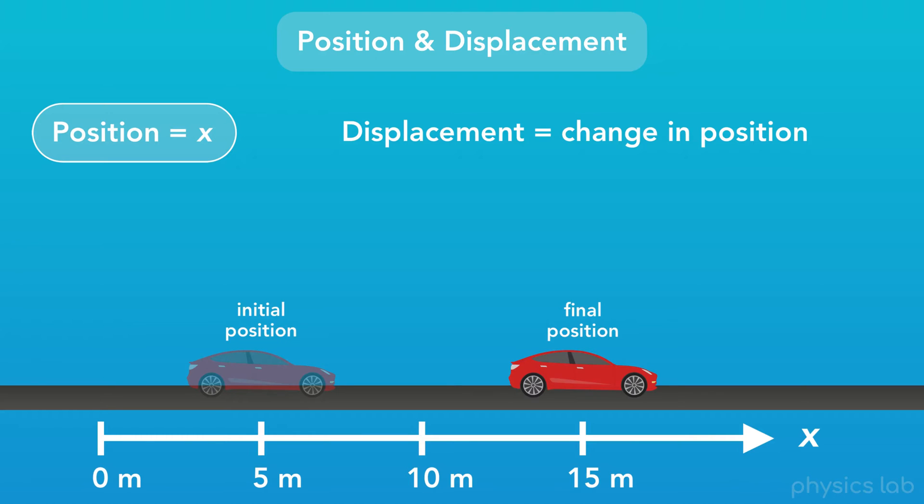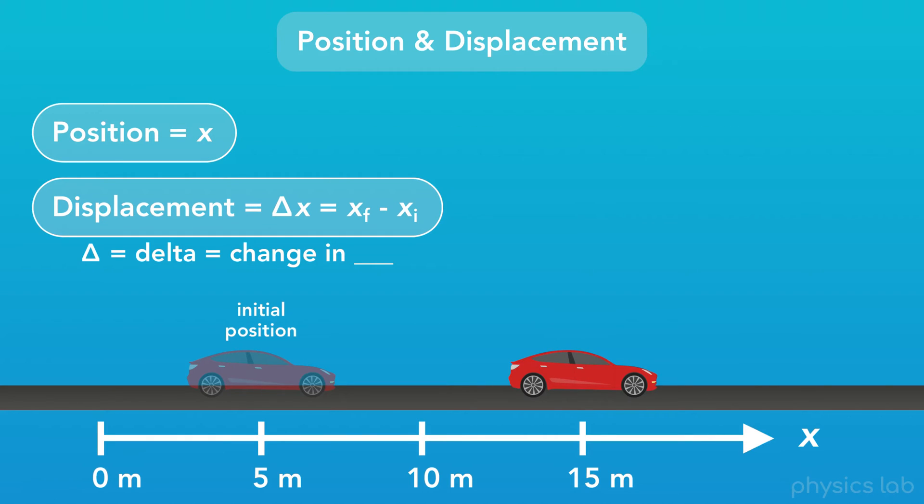Displacement is the change in position of an object. Here's our equation for displacement. The way we actually calculate displacement is the final position minus the initial position. So, what was the displacement of the car? The initial position, or xi, is five meters, and the final position, or xf, is fifteen meters. From our equation, we see that the displacement is the final position minus the initial position. So, in our case, that would be fifteen meters minus five meters, which gives us ten meters. So, when the car drove forward, its displacement was ten meters.